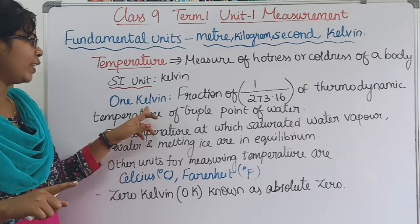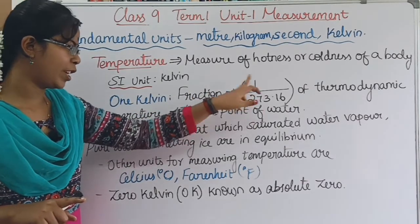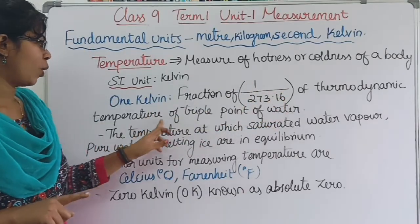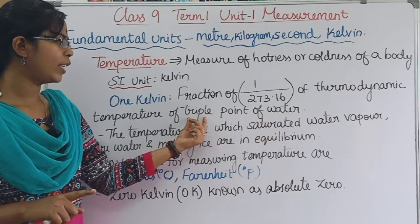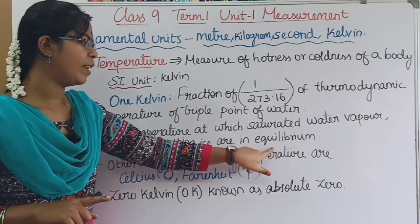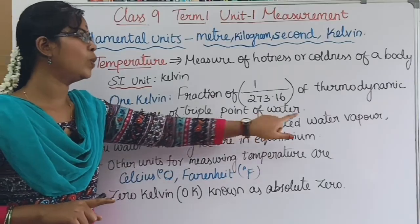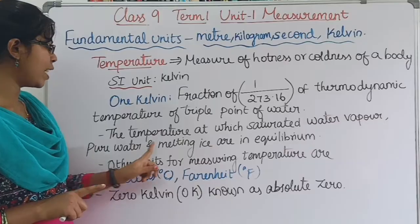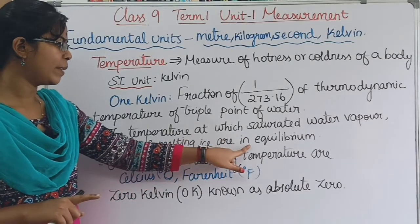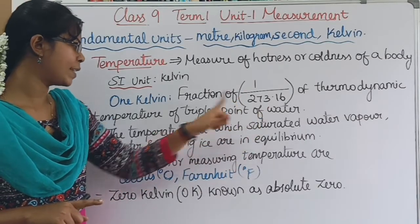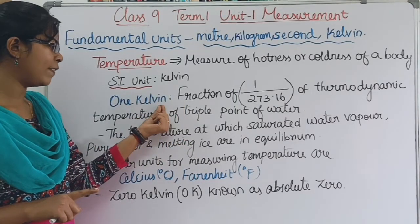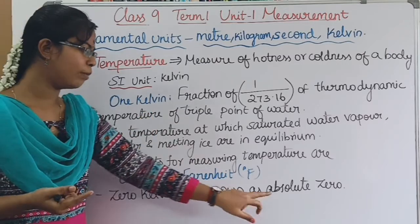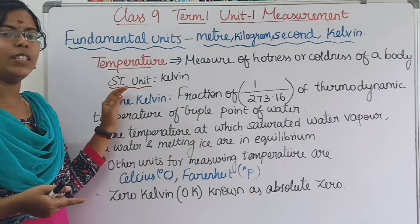Let's talk about 1 Kelvin. The Kelvin is defined as the fraction 1/273.16 of the thermodynamic temperature of the triple point of water. The triple point of water is where 3 states are in equilibrium: water vapor (gaseous state), pure water (liquid state), and melting ice (solid state). 0 Kelvin is absolute zero.